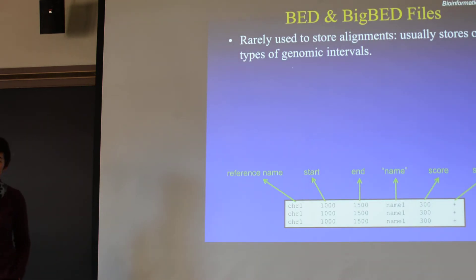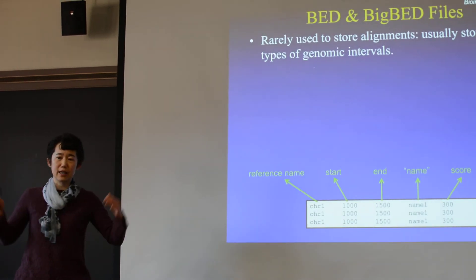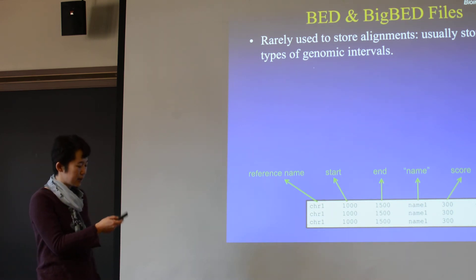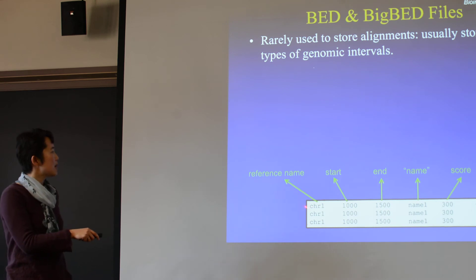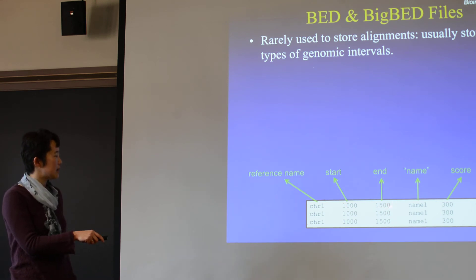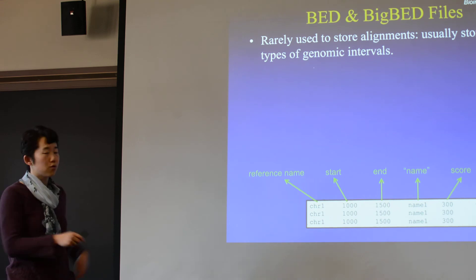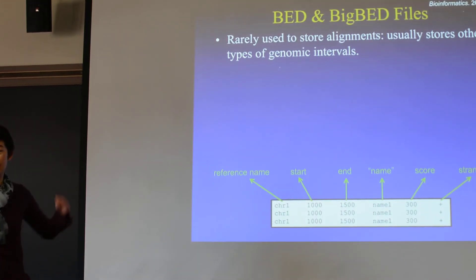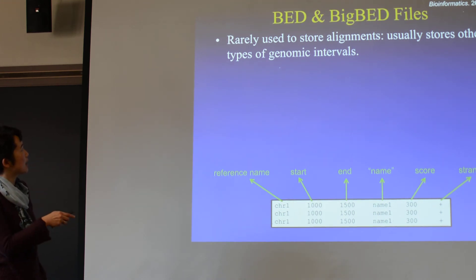Another type of format is called the BED file. In the early days, people used BED files to represent mapped reads, but nowadays it's mostly used for representing a genomic region rather than individual reads, since SAM handles too many lines. It's a simpler format — you have a reference name, a start and end location, so it basically says a read or region is mapped to chromosome 1 at a starting and ending position. You can give it a name and a score, representing the strand of that region.